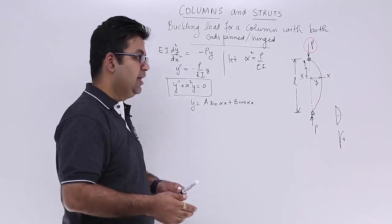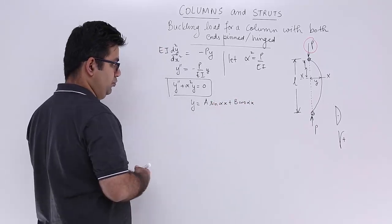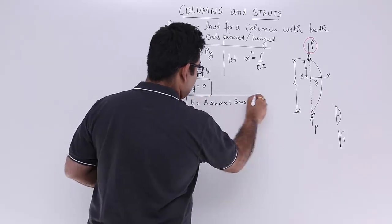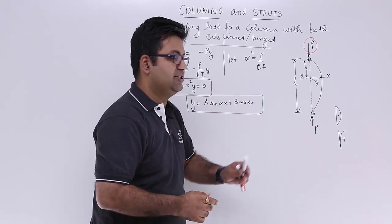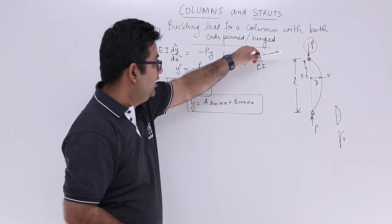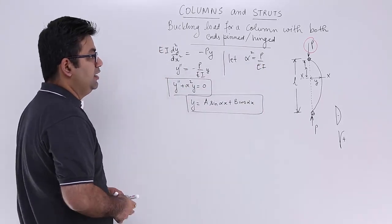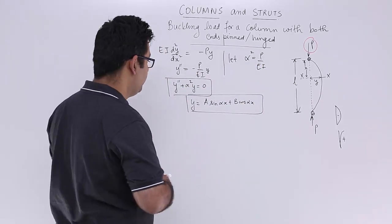You just need to write down the complementary function. The particular integral will be zero. So this is the deflection of the column as a function of the distance x. Now let's write down the end conditions.